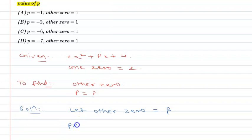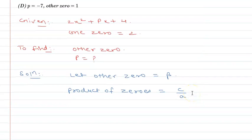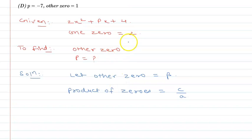Product of zeros is given by c/a, where c is the constant term and a is the coefficient of x². So one zero is already given as 2, and the other zero I've let be beta. So 2 × beta will be c, that is 4, upon a, that is 2.